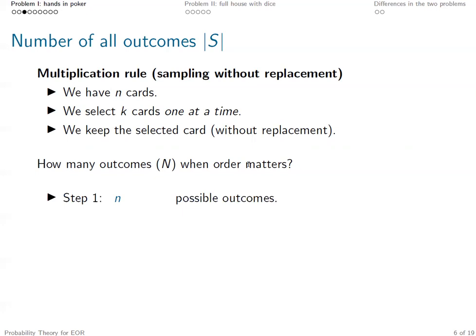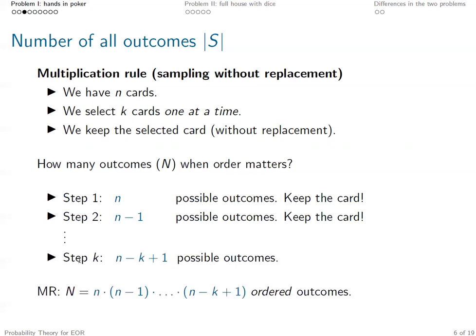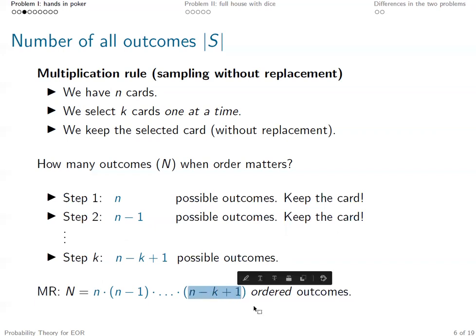So how many outcomes are there when order matters? In step one, we have N possible cards to choose from, so there are N possible outcomes. Then we keep the card, so in step two we only have N−1 cards to choose from — N−1 possible outcomes. Step three gives N−2. Until in step K, that's N minus K plus one possible outcomes. According to the multiplication rule, we simply multiply those numbers altogether to get the total number of ordered outcomes.